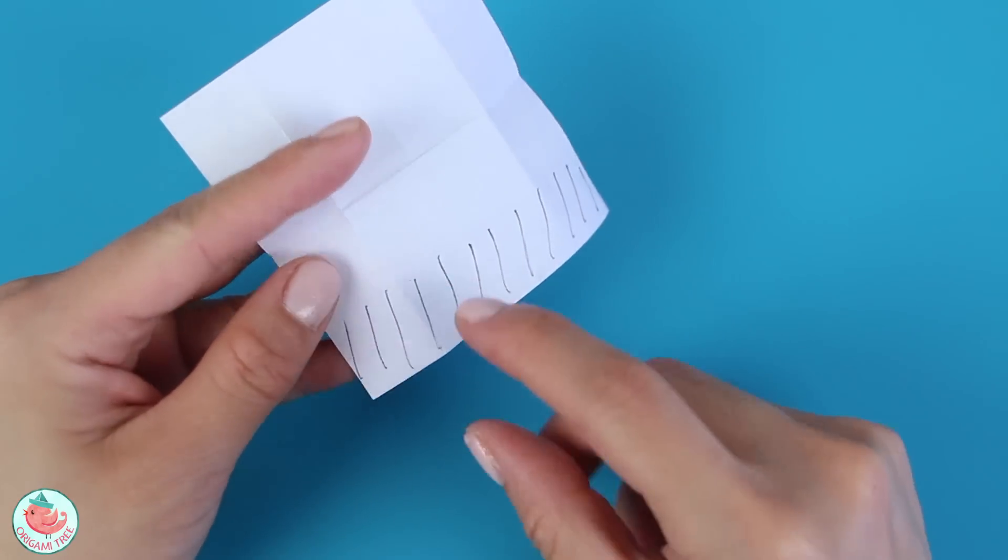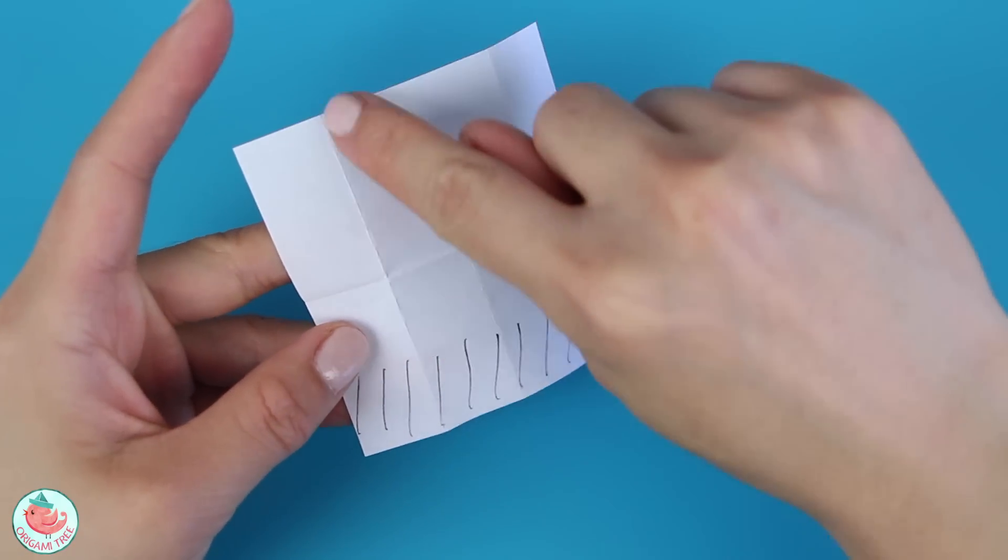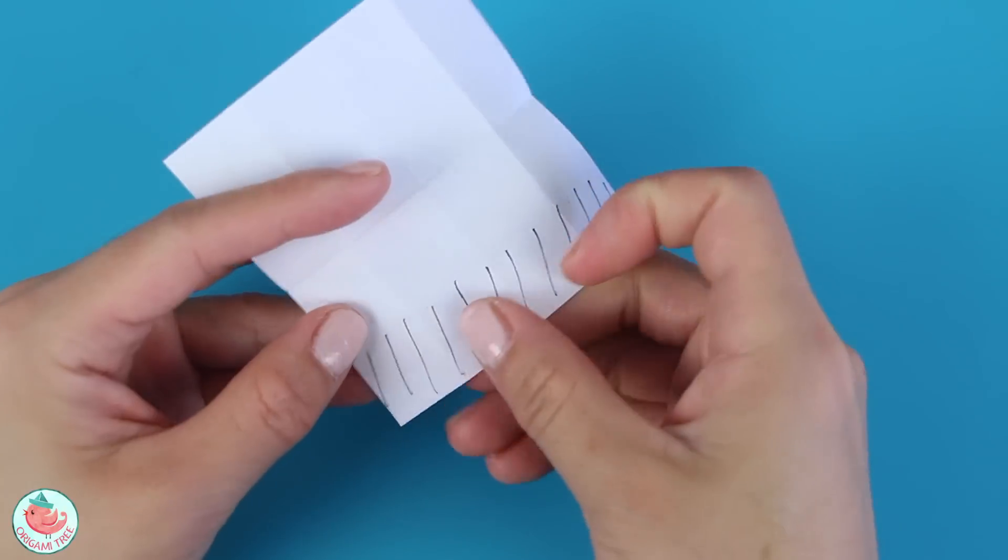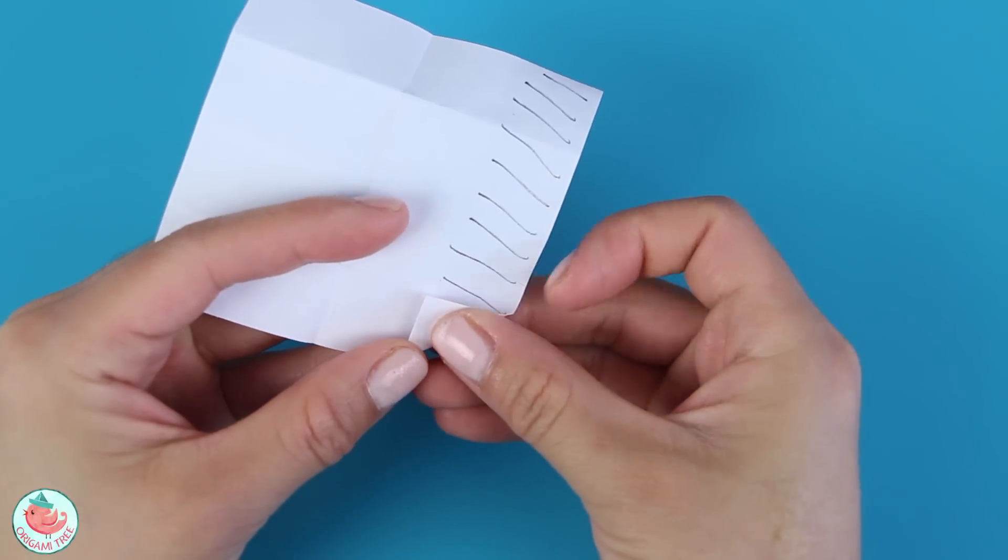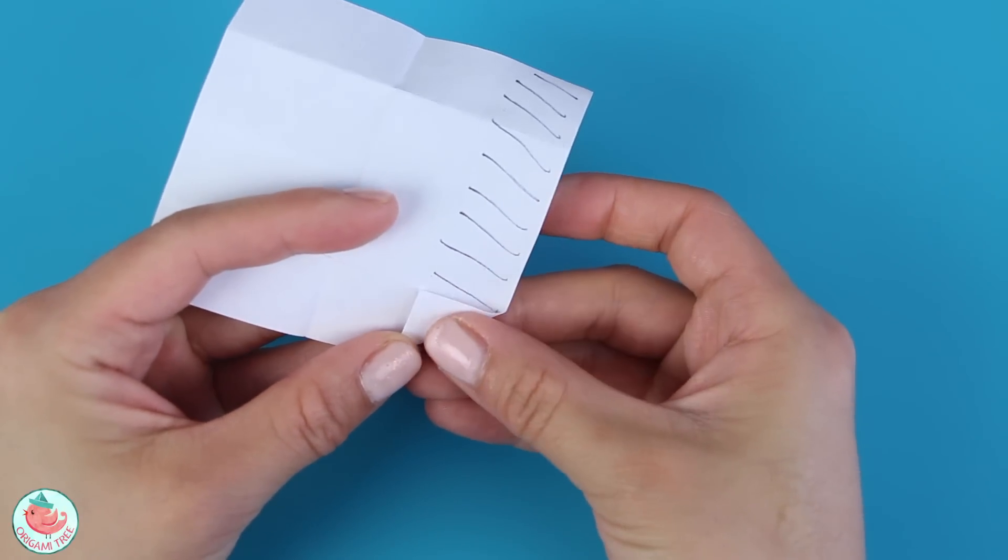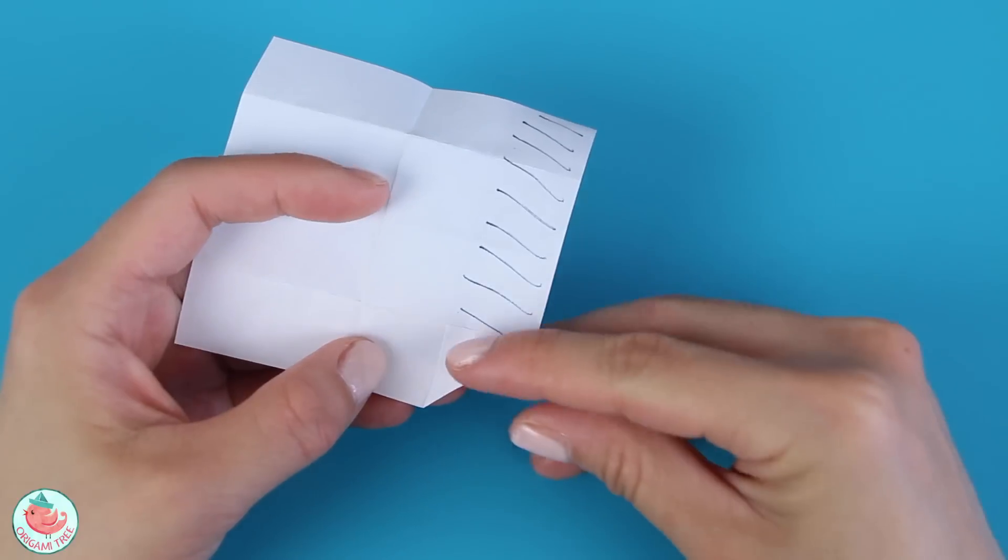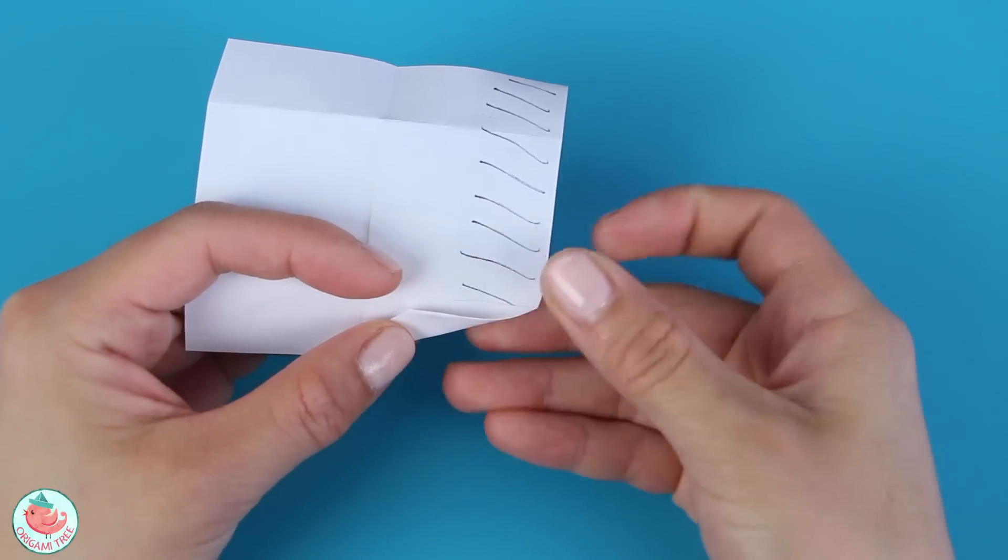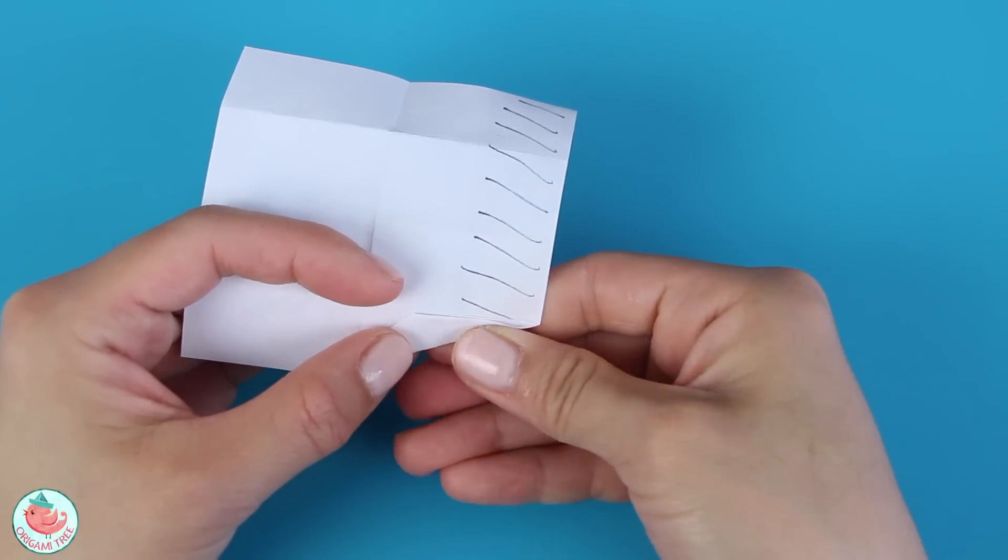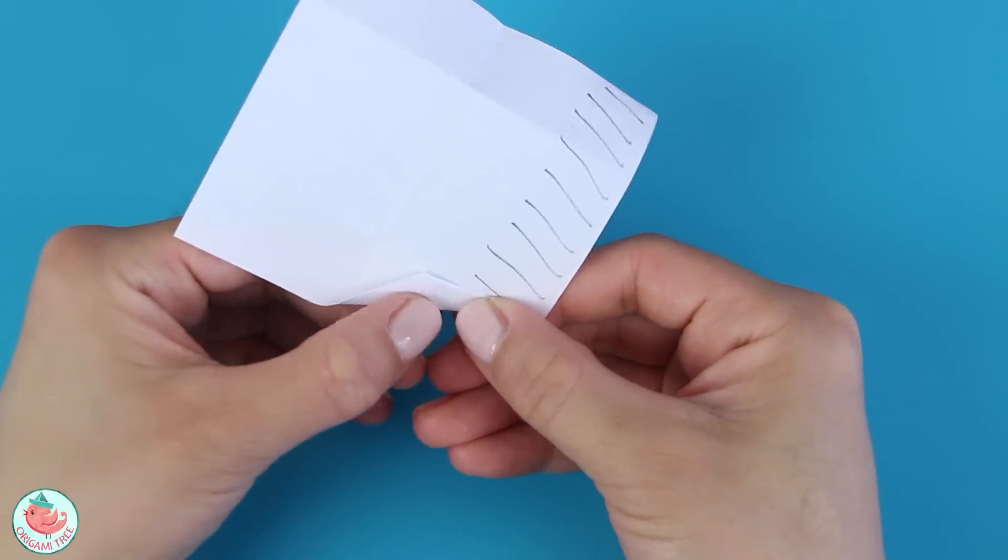Next, you want to take this bottom left-hand corner and fold it diagonally to align with this first left-hand crease. So you're going to fold it diagonally to create a triangle shape and then flatten. Then you want to repeat the same thing again. So fold it diagonally to this crease here and flatten.